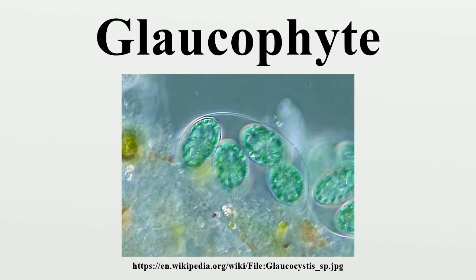The Glaucophytes, also known as Glaucocystophytes or Glaucocystids, are a small group of rare freshwater microscopic algae. Together with the red algae and the green algae plus land plants, they form the Archiplastida.